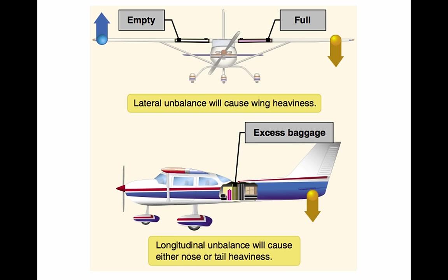It is vital to comply with weight and balance limits established for all aircraft. Loading in a nose-heavy condition causes problems in controlling and raising the nose, especially during takeoff and landing. Loading in a tail-heavy condition has a serious effect upon longitudinal stability and reduces the capability to recover from stalls and spins. Tail-heavy loading also produces very light control forces, making it easy for the pilot to inadvertently overstress an aircraft, especially rotorcraft. Operating above the maximum weight limitation compromises the structural integrity of the rotorcraft and adversely affects performance. On some fully loaded rotorcraft, CG deviations as small as 3 inches can dramatically change handling characteristics.